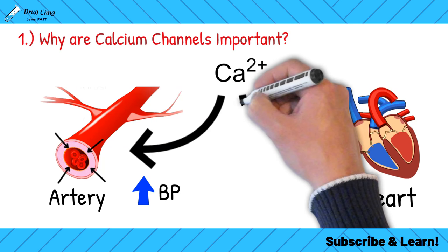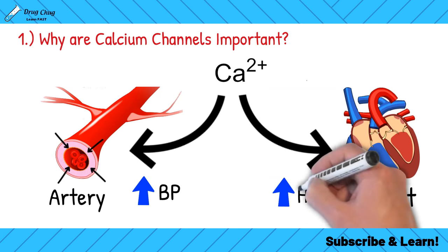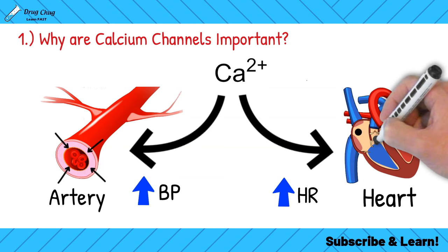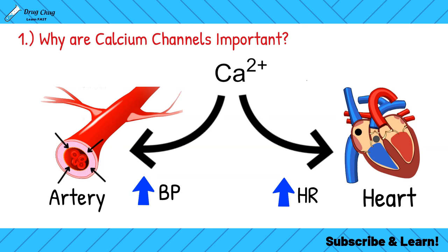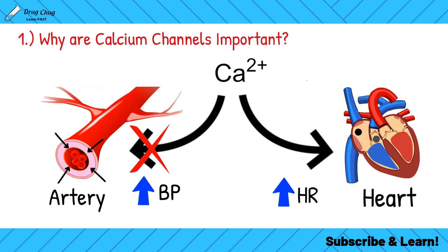Calcium can also influx into the heart through calcium channels to increase heart rate. There are calcium channels on our SA and AV nodes, and when calcium comes in it causes depolarization of our heart muscles, triggering them to contract. This is why we'd want to target calcium channels in the body.